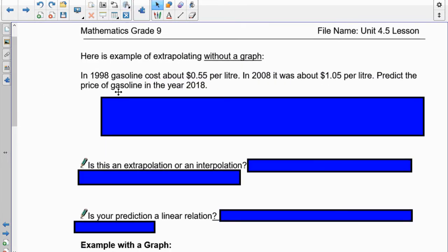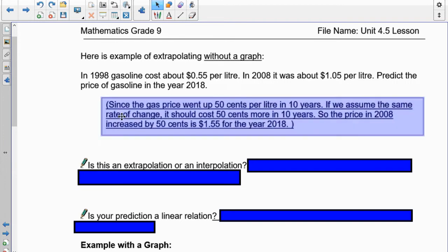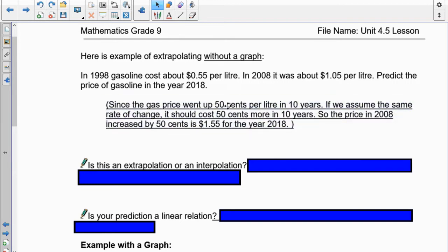So, here's another example. This is when sometimes you're given an example and you don't have a graph. It just gives you the increase per year and you can use that to make a prediction. In 1998, gasoline cost 55 cents per liter. In 2008, it was $1.05 per liter. Predict the price of gasoline in the year 2018. Well, since the gas prices went up by 50 cents per liter every 10 years, we assume that the same rate of change, it should cost 50 cents more 10 years after that. So, we have to go to the 2008 and it's going to cost 50 cents more. So, we're assuming that in 2018, it will be $1.55.